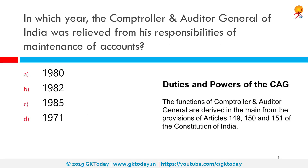In which year was the Comptroller and Auditor General of India relieved from his responsibility of maintenance of accounts? The correct answer is 1971. Today, the CAG is responsible for the audit of the financial transactions of the union and state governments and union territories.